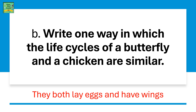Write one way in which the life cycles of a butterfly and a chicken are similar. The similarity in both life cycles is that they both lay eggs, and they both have wings.